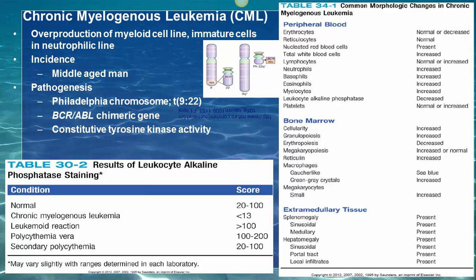The table on the right summarizes the morphological changes in CML. In peripheral blood, pay attention to the Philadelphia chromosome, increased neutrophils, eosinophils, and basophils, and myelocytes. Platelets are also increased. Leukocyte alkaline phosphatase (LAP) is decreased. LAP is an enzyme found in the membrane of secondary granules of neutrophils.